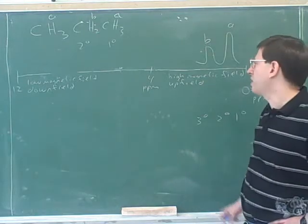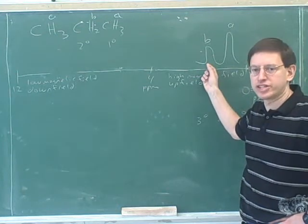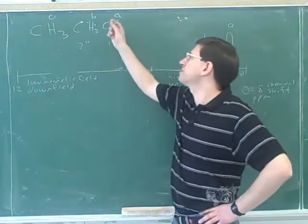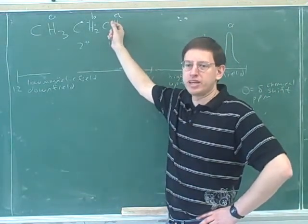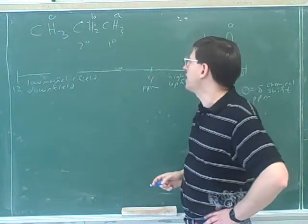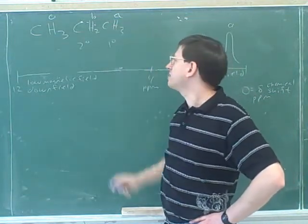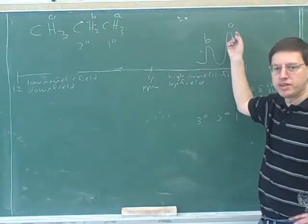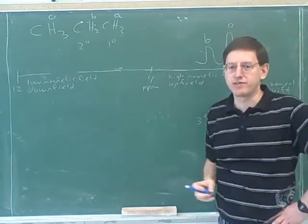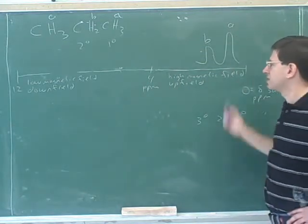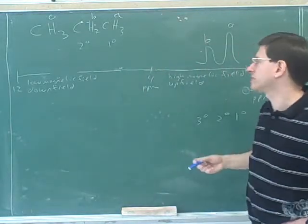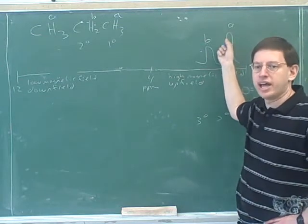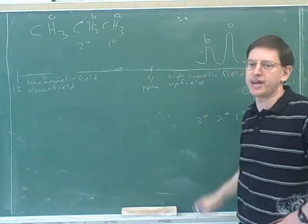By the way, what we're going to talk about now is the horizontal position of the peaks — that's the chemical shift. But you might have already guessed: what about the vertical height? Well, the vertical height just represents how many hydrogens are absorbing at each peak. So why did I draw the A higher than the B? Well, A represents six hydrogens. How many hydrogens does B represent? Two. That's why this peak should be lower. That's the third piece of information you can get from the proton NMR.